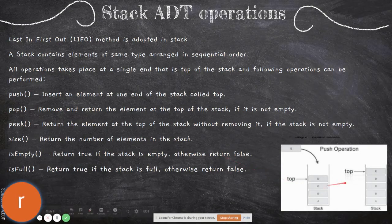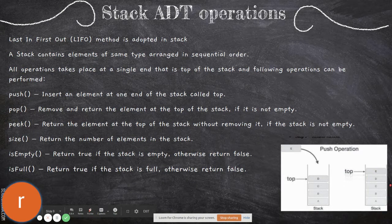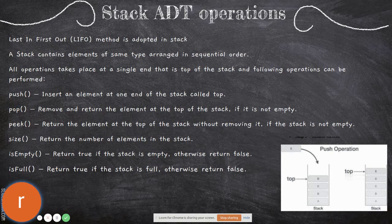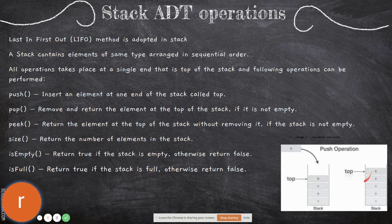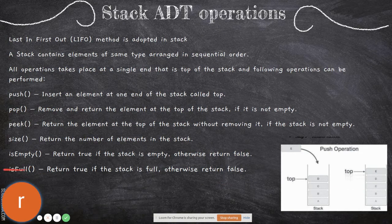You also define peek — which is just visiting the top element — and size, which at any point of time returns the number of elements. For example, if there are four elements and you add one, size returns 5. Then isEmpty — it checks whether the stack is empty before removing anything, since you cannot pop from an empty stack. And isFull — if the maximum size is five elements, you cannot push a sixth, so you check isFull before inserting each element.